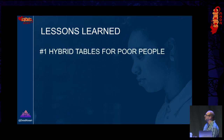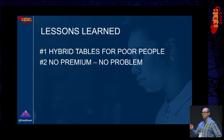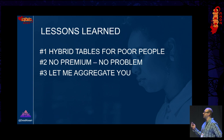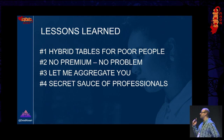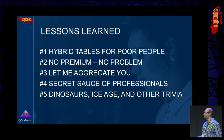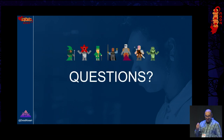To wrap up: five lessons learned. First, hybrid tables for poor people — you can mimic hybrid table behavior even with a Pro license, no Premium required. Second, reduce cardinality whenever possible. Third, aggregations — it's not enough to just create aggregated tables; you must make Power BI aware of them. Fourth, 'Available in MDX' — a secret sauce for professionals, a hidden gem in the tabular model using experimental features in Tabular Editor. Fifth, auto date/time — as illustrated by the 'dinosaur-sized' 8,000-year range, disable it and always use a proper date dimension. Questions? I'll be around if you want to discuss. Please provide your feedback — I'd really appreciate it.